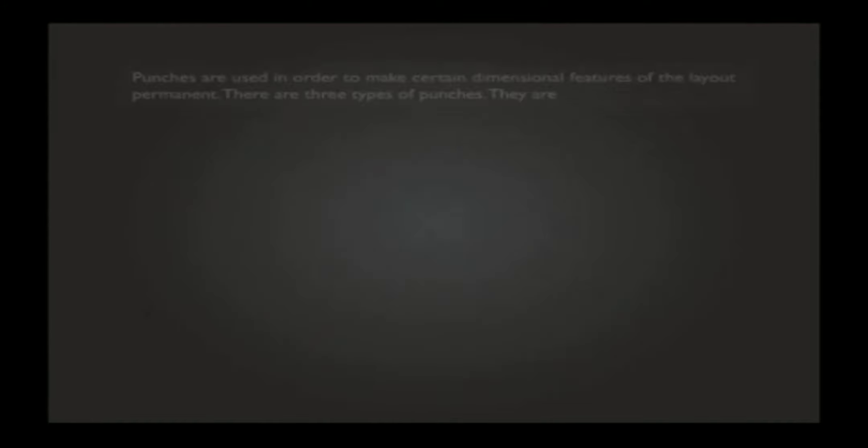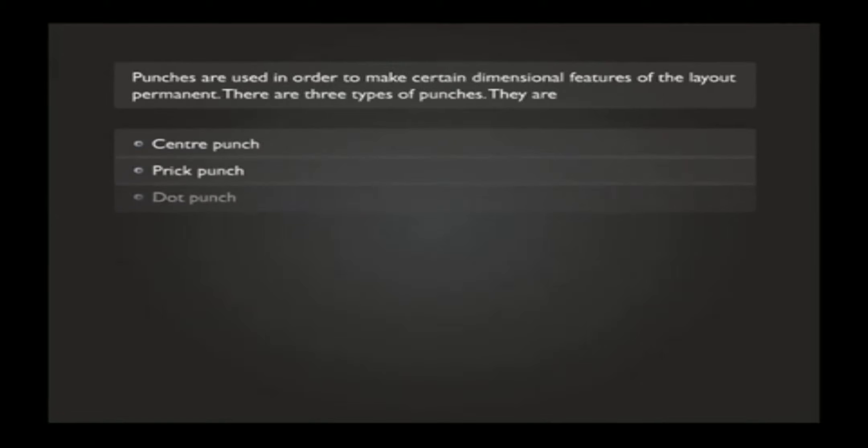Punches are used in order to make certain dimensional features of the layout permanent. There are three types of punches. They are center punch, prick punch, and dot punch.